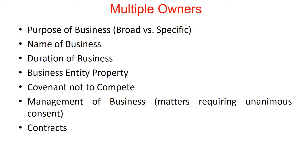That agreement governs how decisions are made and how somebody can leave or dissolve the practice. Starting with the first item: the purpose of the business. If you just use some form downloaded off the internet, those forms typically say something to the effect that the business is going to do everything legally allowed to earn a profit. But the purpose of the business may be more specific — if the purpose is to operate a chiropractic practice, then that should be stated. The reason is to avoid conflicts of interest, so that if the business owners have other activities where they try to make money, it doesn't create a conflict with the purpose of the business being run by the multiple owners.